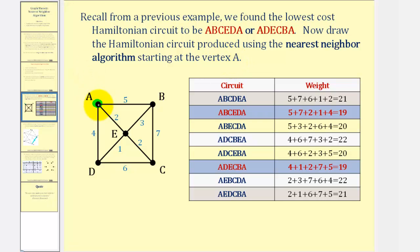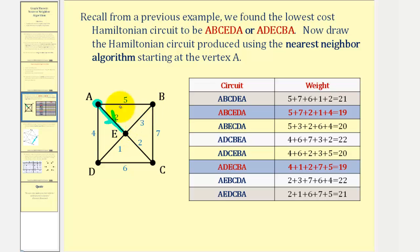Now we want to draw the Hamiltonian circuit using the same graph but using the nearest neighbor algorithm, starting at vertex A. So if we start at vertex A, we have three possible vertices to visit. We can go from A to B with a weight of five, A to E with a weight of two, or A to D with a weight of four. We select the edge with the least weight, so we'll go from A to E.